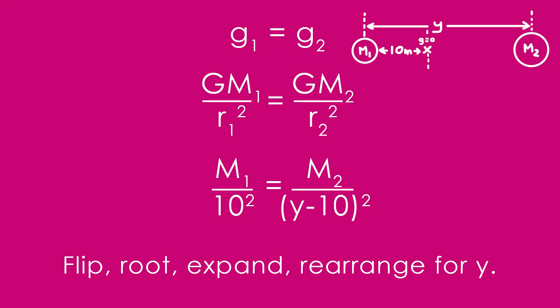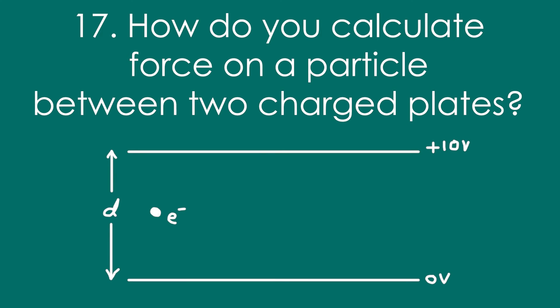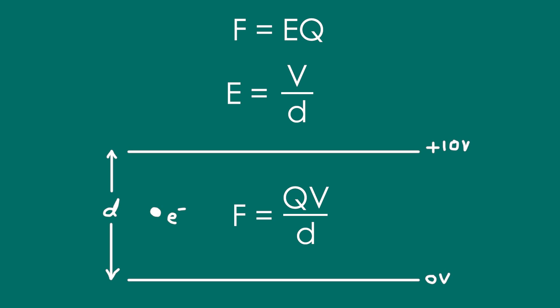Seventeen, how do you calculate the force on a particle between two parallel charged plates? Well, we know that F is equal to Eq, but what is E equal to? Well, because it's parallel plates, we can say that the electric field strength is equal to v over d, that is the potential difference divided by the separation of the plates. So combining those two, we end up with F equals qv over d.